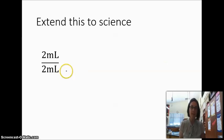We can extend this to science where instead of using variables we can use units. The 2 represents a certain number of milliliters and this 2 represents a certain number of milliliters. So the 2's can divide out to 1 and the milliliters can divide out as well. So we end up with just 1.